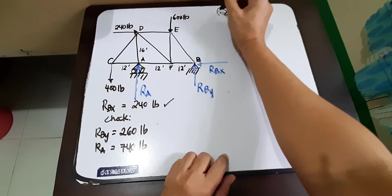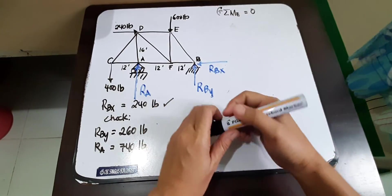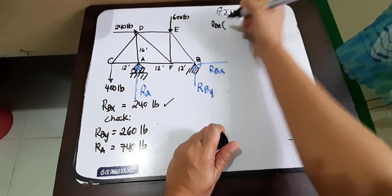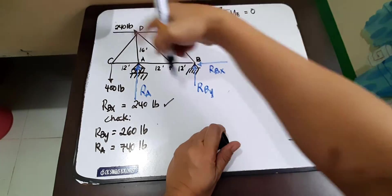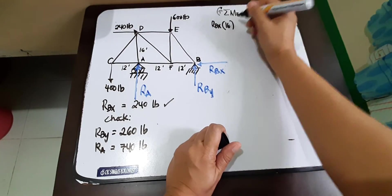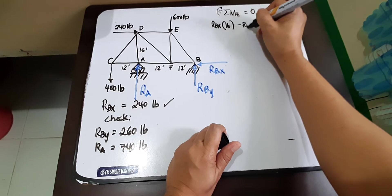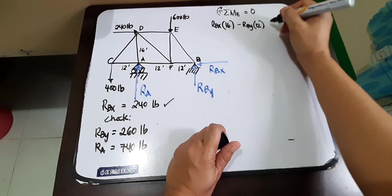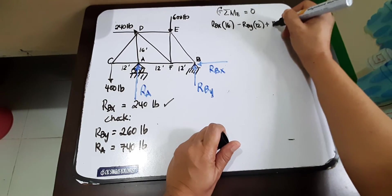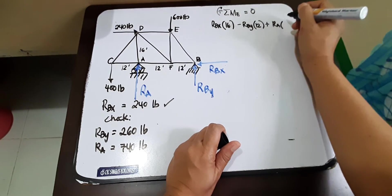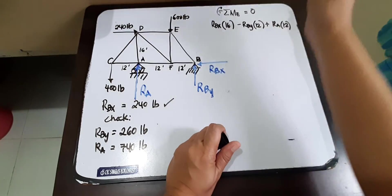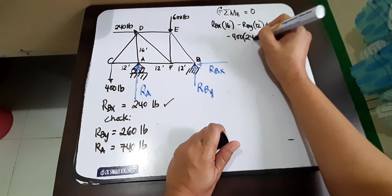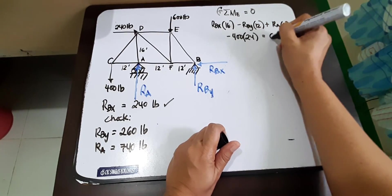Okay, so positive as clockwise moment effect. So we'll start with RBX multiplied by its moment arm would be 16, and it will create a clockwise. Then we have a counterclockwise effect, RBY times 12. And then we have a clockwise effect, plus RA multiplied by 12. And then we have a counterclockwise, 400 multiplied by 24, equals to zero.